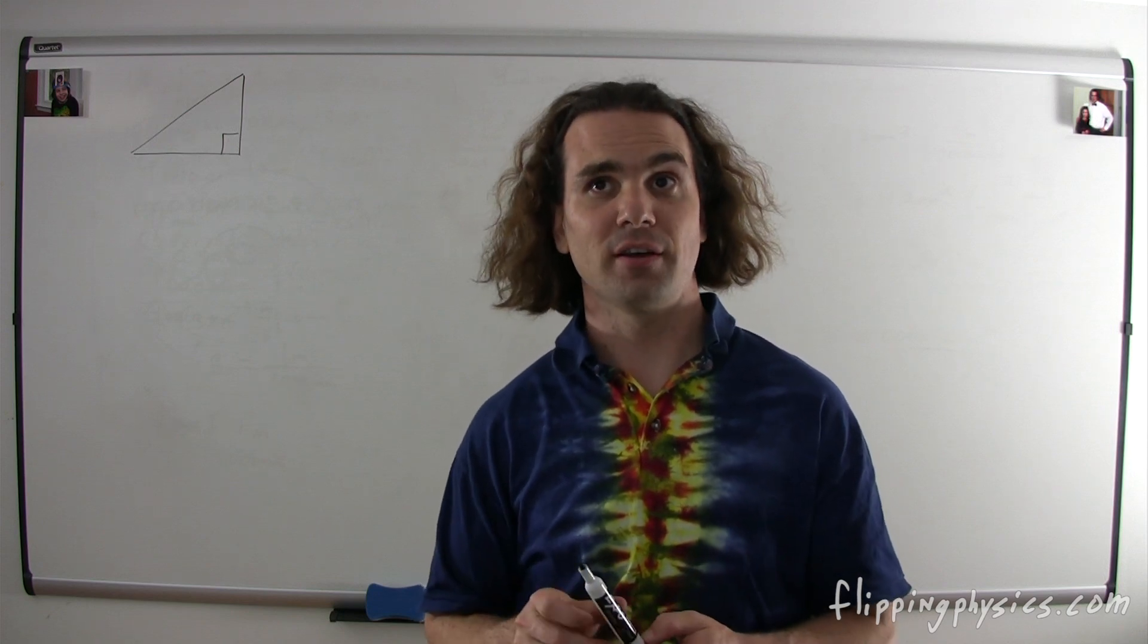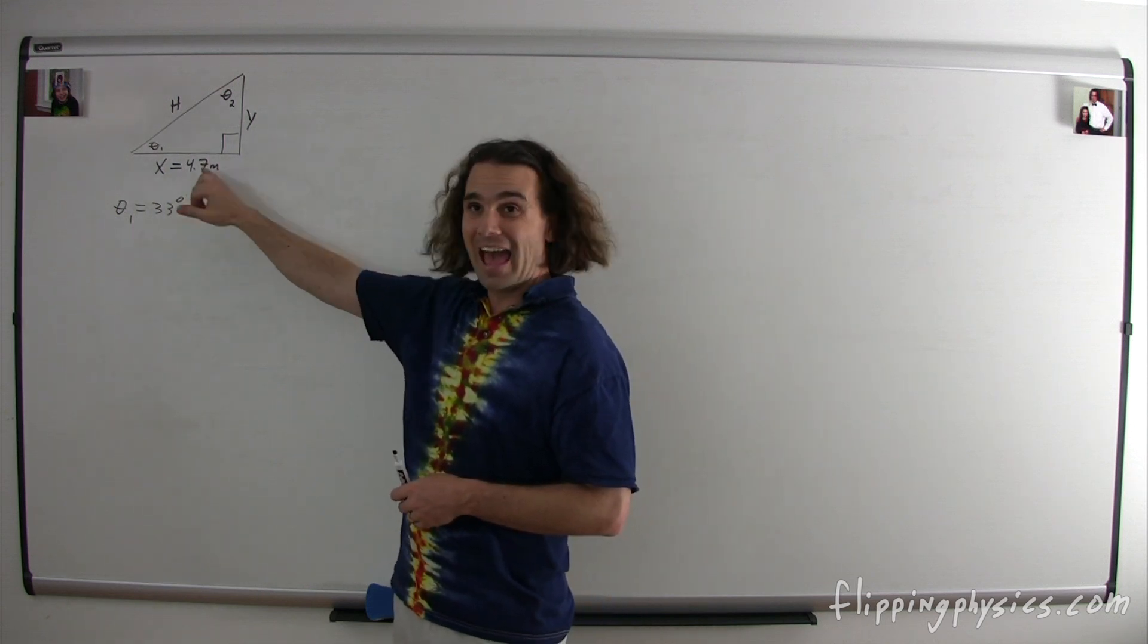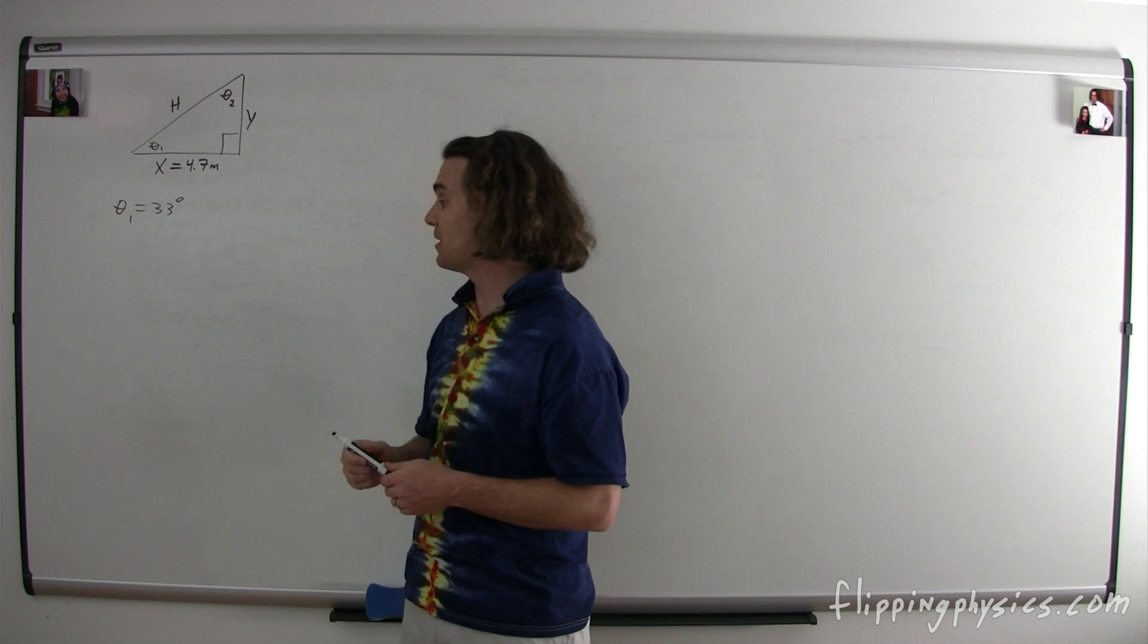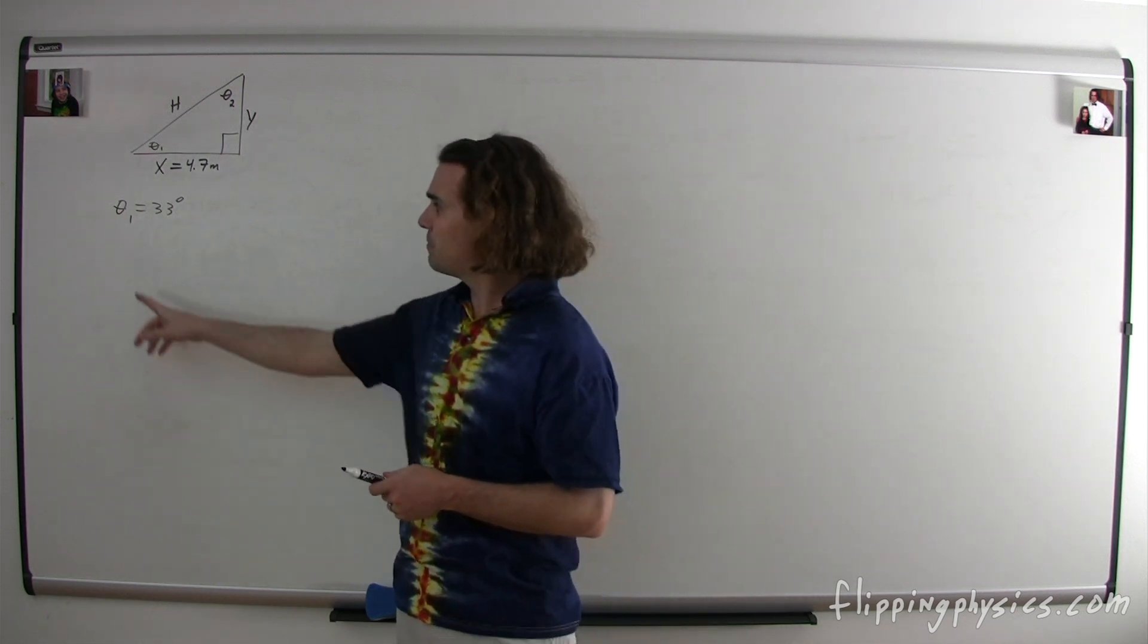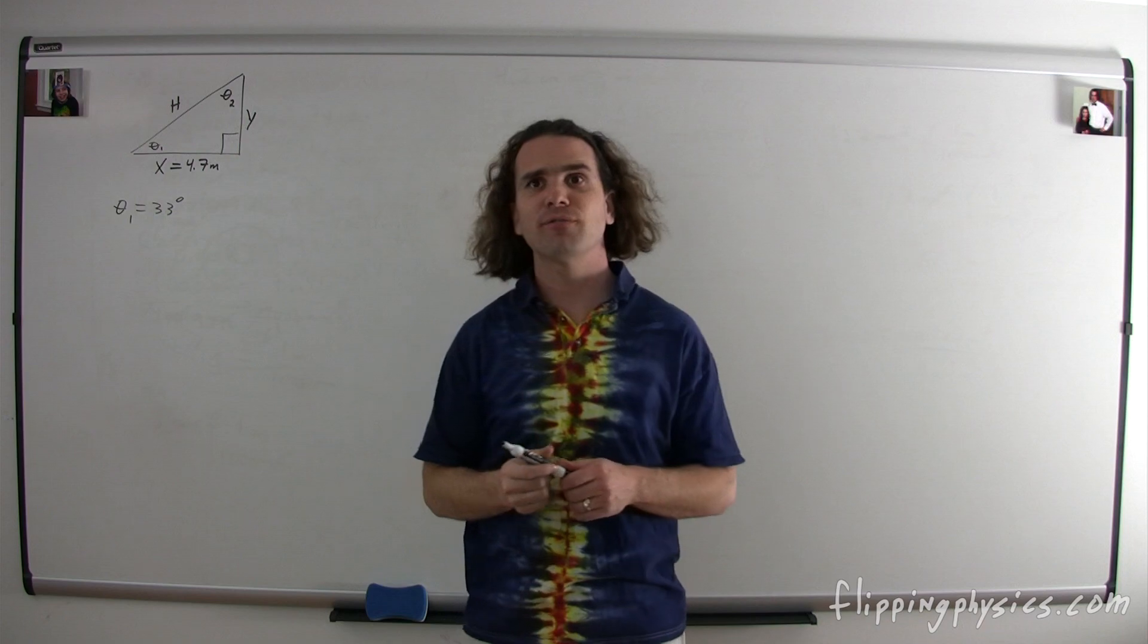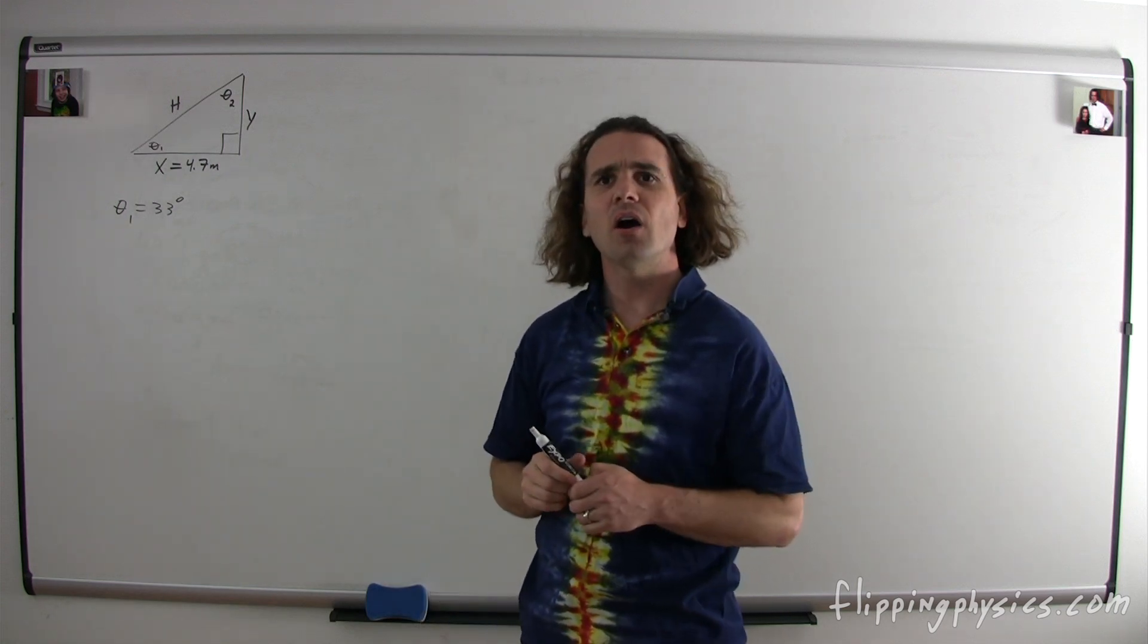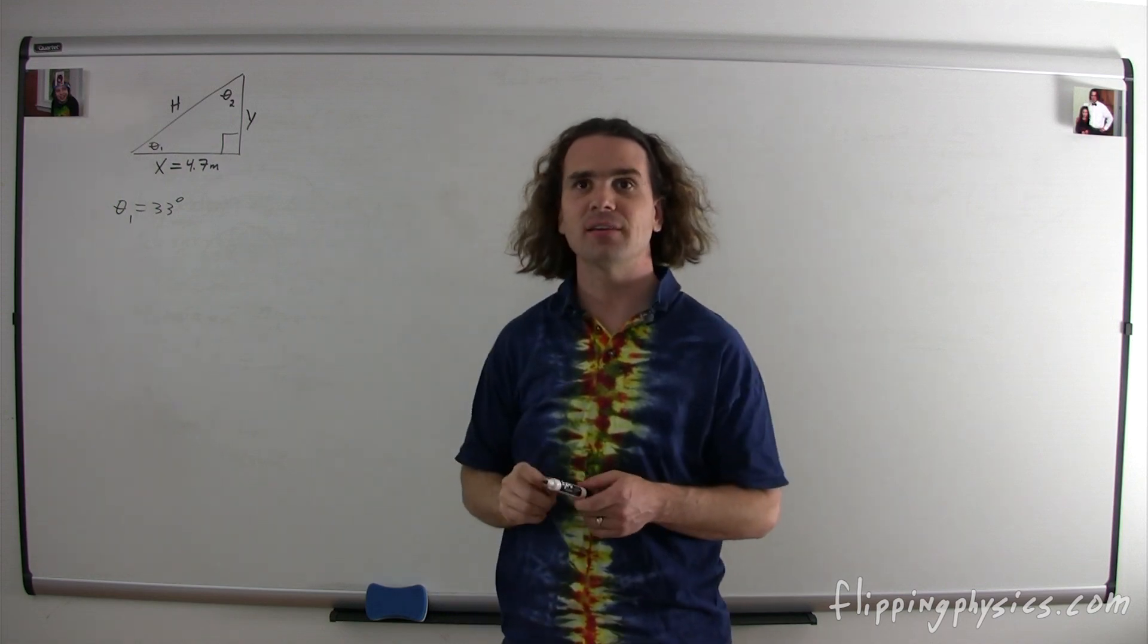Let's identify some parts of this triangle. Let's call this side x, which has a distance of 4.7 meters, this side of the triangle y. This angle in the triangle is going to be theta 1, and that has a measurement of 33 degrees. This symbol theta, it's a Greek letter theta, and it's commonly used for angles in physics. Let's call this side h for hypotenuse, or the side opposite the right angle. And let's identify this angle as theta 2. Our goal is to determine the values for y, the hypotenuse, and theta 2.